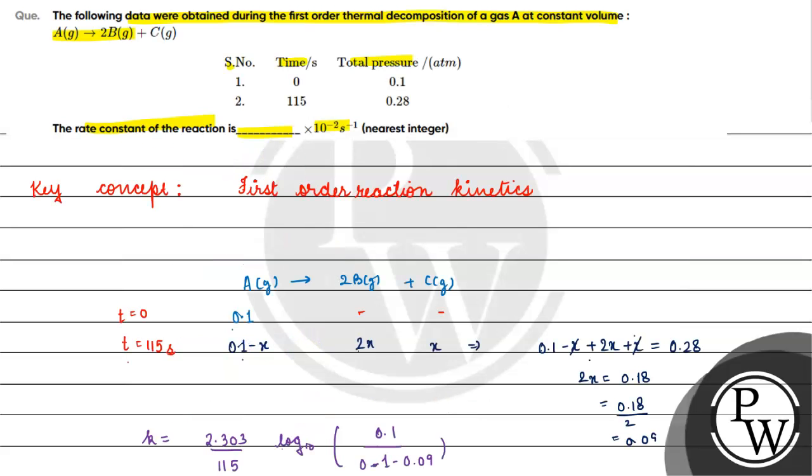For the nearest integer, the answer is 2. The value of the rate constant is 2 × 10^-2 per second. I hope you understood it well. Thank you all the best.